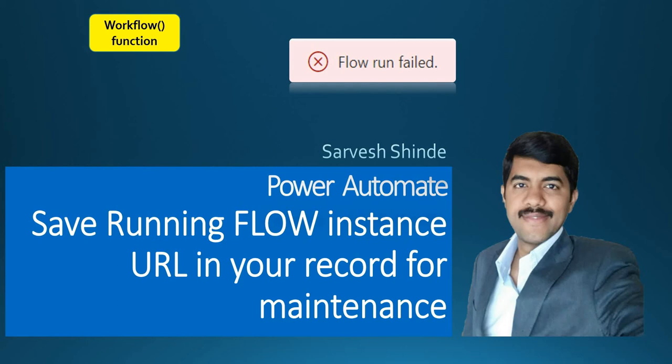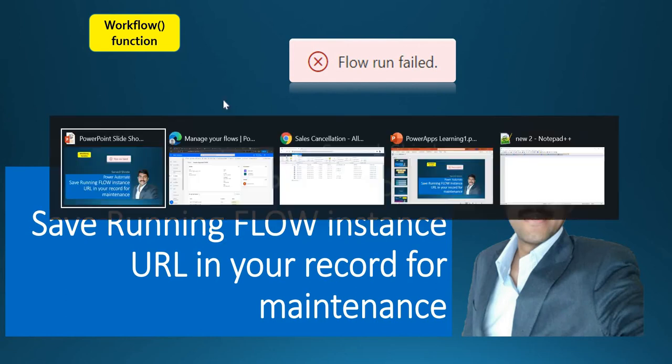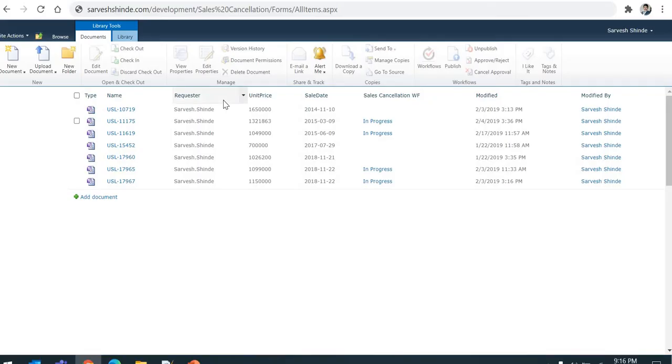Hey guys, welcome back to PowerApps Learning Channel. Today we are going to discuss how we can save the flow running instance URL in your record itself, so that you can easily locate that particular instance whenever it's needed.